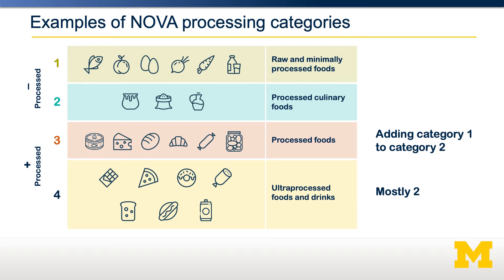In most Western societies, much of our diet is ultra-processed foods, and obesity rates have increased substantially as ultra-processed foods in our diets have increased. Is there really a relationship between obesity and ultra-processed foods? Let's look at some of this evidence.